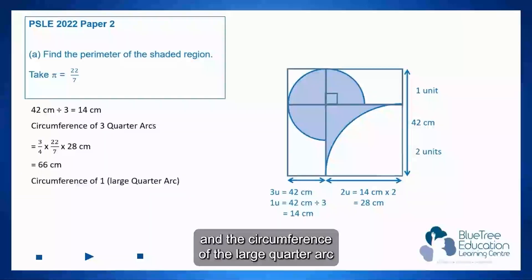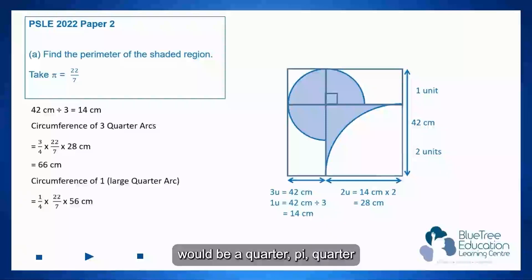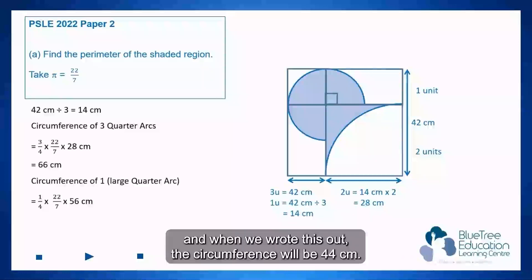And the circumference of the large quarter arc would be a quarter π, quarter times π times the diameter of 56 centimeters. So as you can see that this is 28 cm. So 28 cm times 2 will be 56 centimeters. And when we work this out the circumference will be 44 cm.